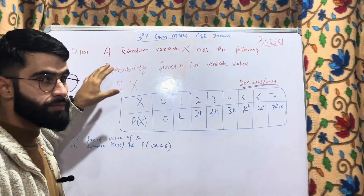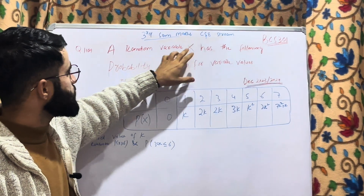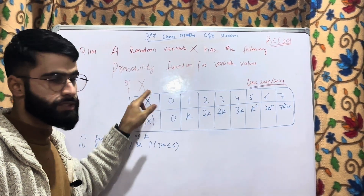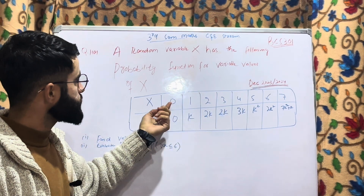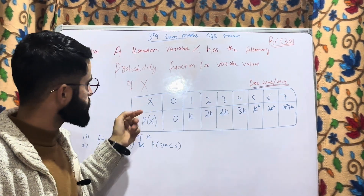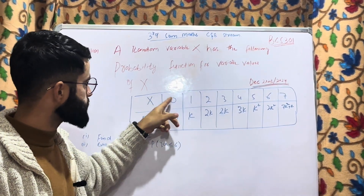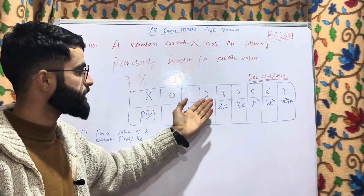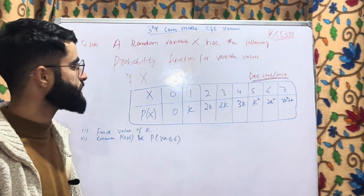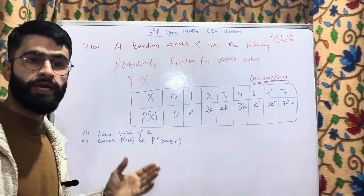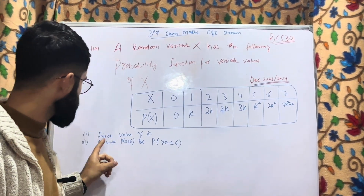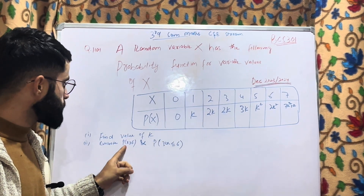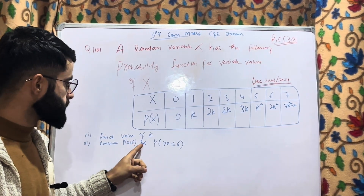The first question is on probability. A random variable X has the following probability function for various values of x. The values and their respective probabilities are given. Probability of X at 0 is equal to 0, probability of X at 1 is equal to k, and so on. What we have to calculate is: find the value of k, and evaluate P(X ≥ 6).